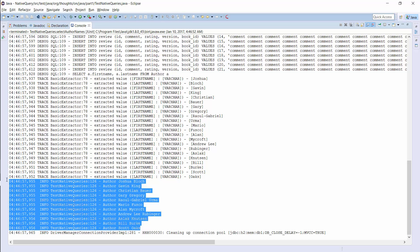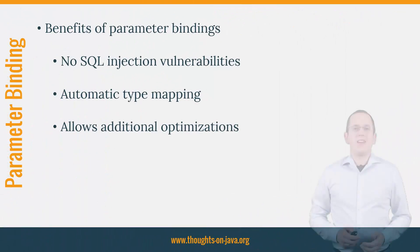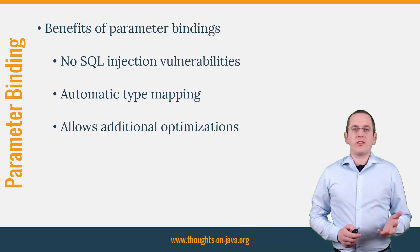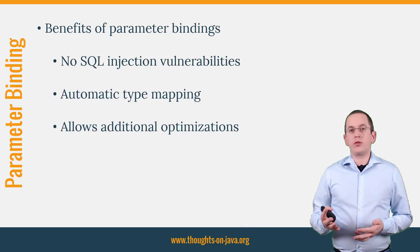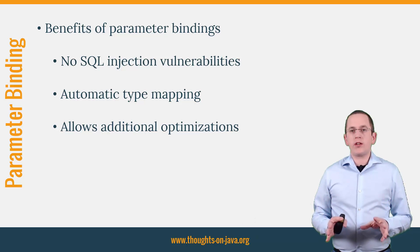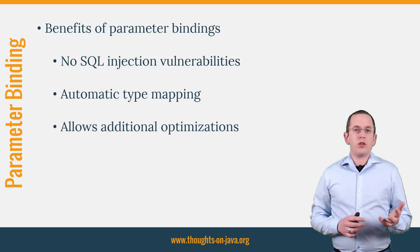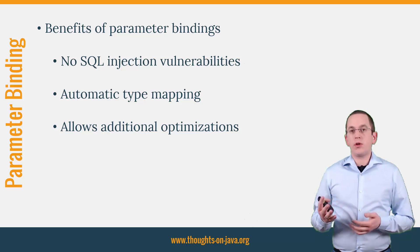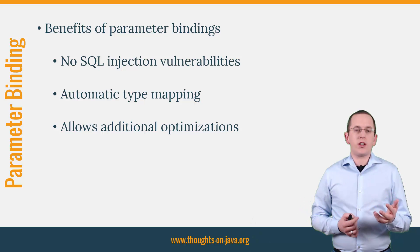The next thing I want to show you are query parameters. You can use them in the WHERE clause of your query to define predicates which the returned records have to fulfill. Similar to JPQL queries, you can and should use parameter bindings for your query parameters instead of putting the values directly into the query string. That provides several advantages: you do not need to worry about SQL injection, the persistence provider maps your query parameters to the correct types, and it can do internal optimizations to provide better performance.